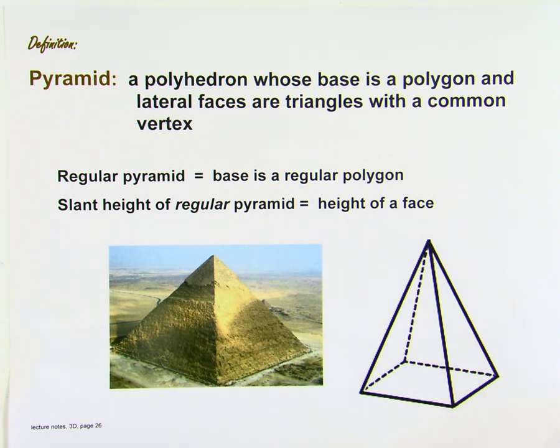A regular pyramid is a pyramid whose base is a regular polygon. Same side length, same angles, cross-pointing, equal to each other, regular.